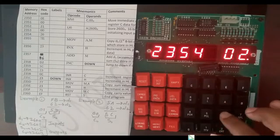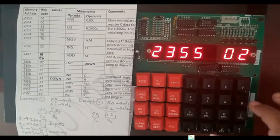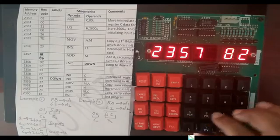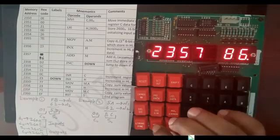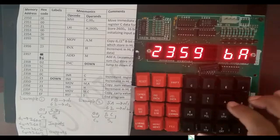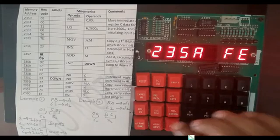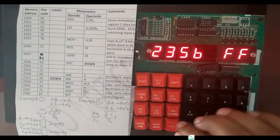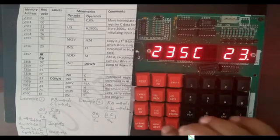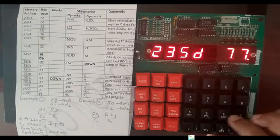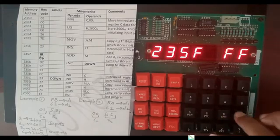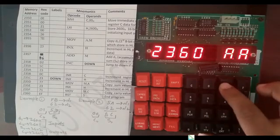Then next. Then MOV A, M hex code 7E, then next. Then INX H hex code 23, then next. Then ADD M hex code 86, then next. Then JNC hex code D2, then next. Then lower byte of address 5C, then next. Higher byte of address 23, then next. Then INR C hex code 0C, then next. Then INX H hex code 23, then next. Then MOV M, A hex code 77, then next. Then RST 5 hex code EF. Then INX H hex code 23, then next. Then MOV M, C hex code 71, then next. Then RST 5 hex code EF.